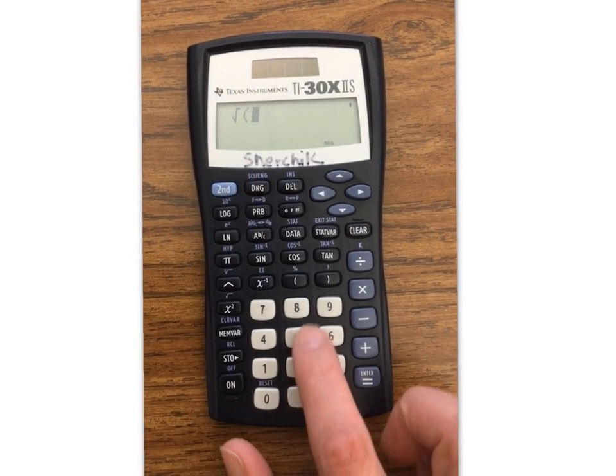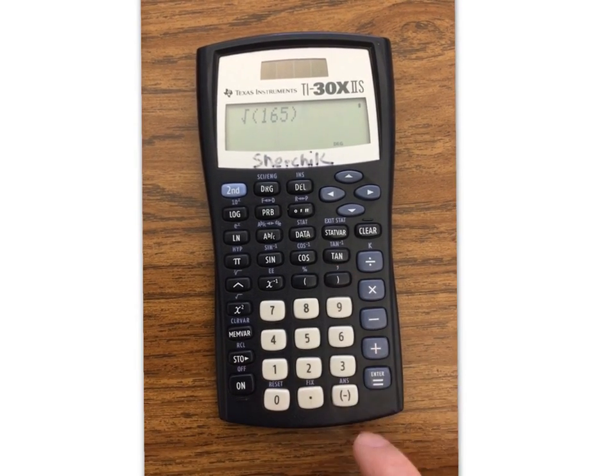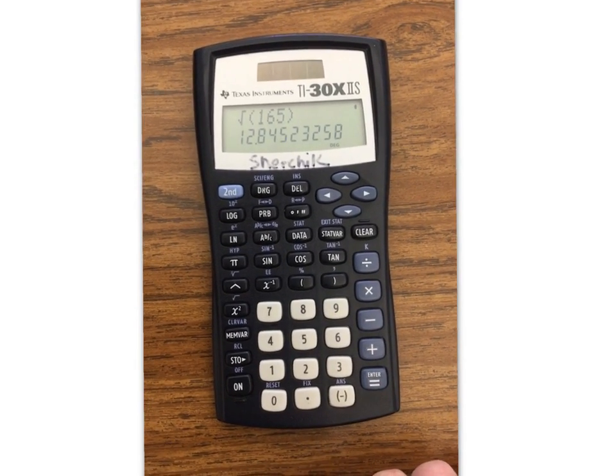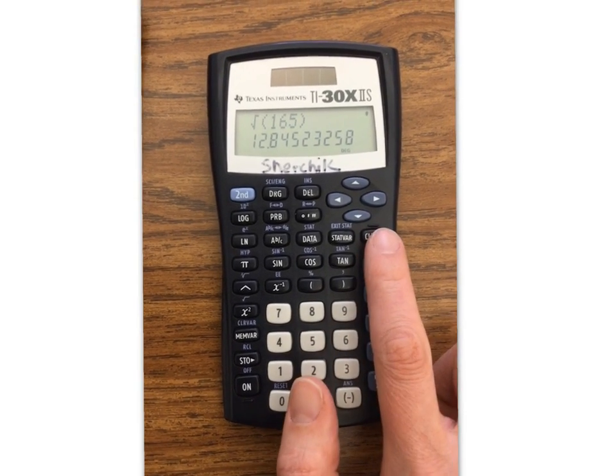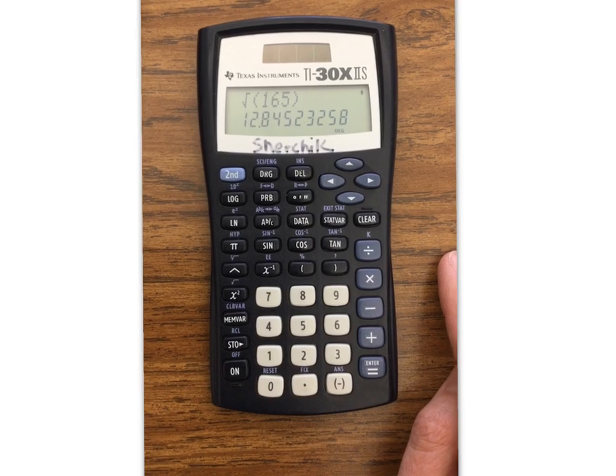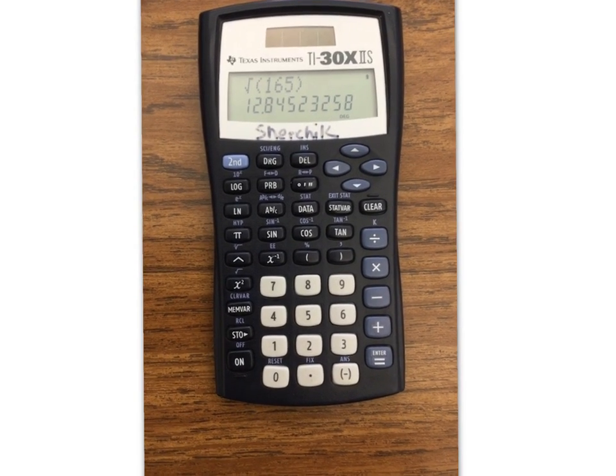So try it again. Second, radical sign, let's do 165, parentheses, and the square root of 165 is about 12.85. So know how your calculator works. If you don't know how to find the square root of a number on there, make sure you check with your teacher before going further. You'll need that for the rest.